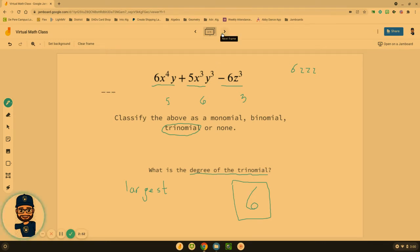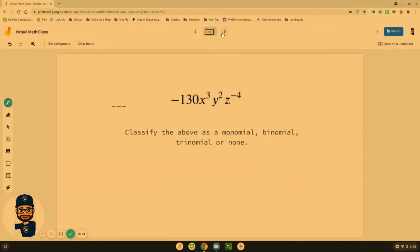Let's take a look at another one. Classify the above as a monomial, binomial, trinomial, or none. There is a little bit of a dilemma here: x³y²z⁻⁴. Those of you that said monomial, I understand why you would have said it, however monomial is incorrect for this one.